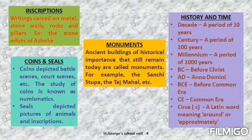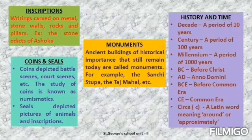Now we move on to the next source of history, i.e. inscriptions. These are writings written on hard surfaces like stones, rocks, pillars, etc. One of the famous inscriptions is the stone edicts of Ashoka. They tell us about the king, the people and their life.